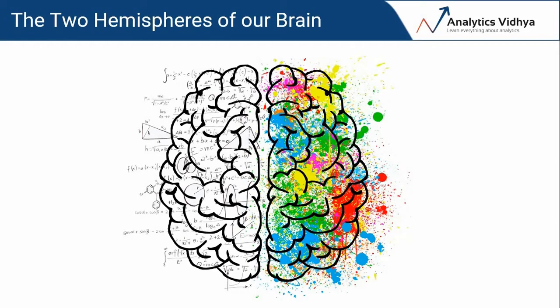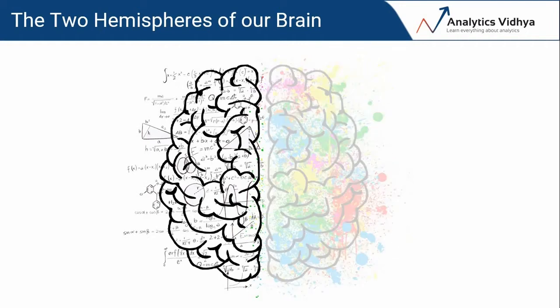Speaking of our brain, we can broadly divide it into two hemispheres — the left side and the right side. These two hemispheres control motion and receive sensory inputs from the opposite side of our body. But what does all of this have to do with visualizations? Well, let's see.